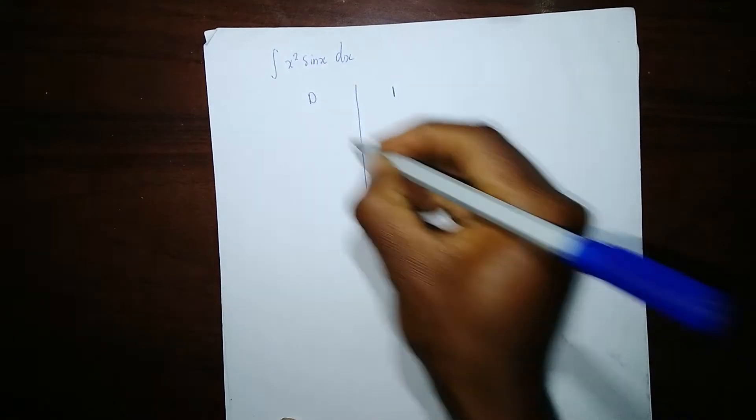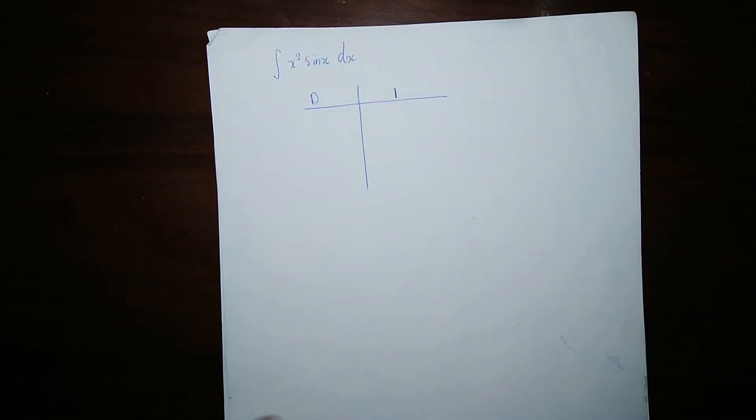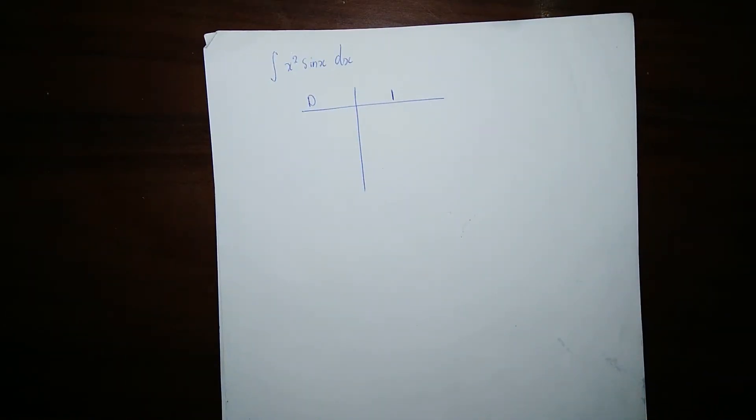You make a table. What you note is when choosing the one to differentiate, you need to choose something that can be differentiated to zero. In this case, we're looking at x² and sin(x).